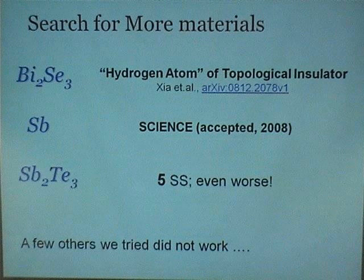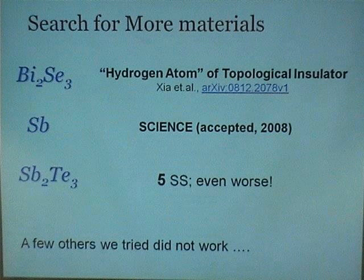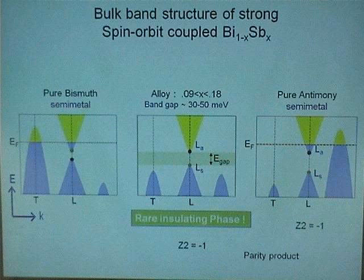Antimony, although it's a metal, has a non-trivial Z2 number. So we looked at antimony in extensive detail in connection to bismuth antimony. The advantage with antimony is it's a pure metal — there's no alloying disorder, nothing. It's very clean, and it confirms that what we said about bismuth antimony is correct.